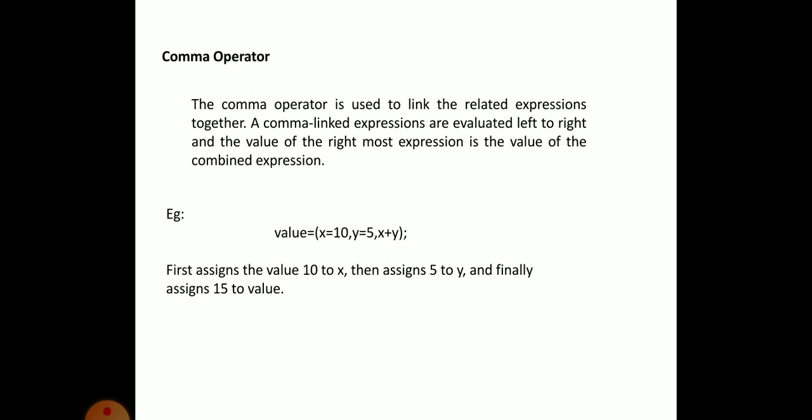The comma operator is used to link related expressions together and separate variables of a similar type. Comma-linked expressions are evaluated left to right, and the value of the rightmost expression is the value of the combined expression. For example, int a, b declares a and b as integer variables. Another example: value = (x = 10, y = 5, x + y) — first 10 is assigned to x, then 5 to y, and finally x + y gives 15, which is assigned to value.